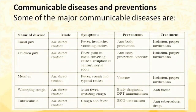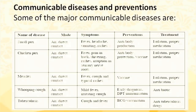Here is a chart of communicable diseases covering the name of the disease, the mode of how it spreads, the symptoms, preventions we can take to avoid diseases, and treatments. We have covered chickenpox, measles, whooping cough, and tuberculosis. For smallpox: mode of transfer is air and direct contact; symptoms are fever, headache, vomiting, and rashes; prevention is by antibody production; and treatment involves keeping the affected person in isolation with proper medication.